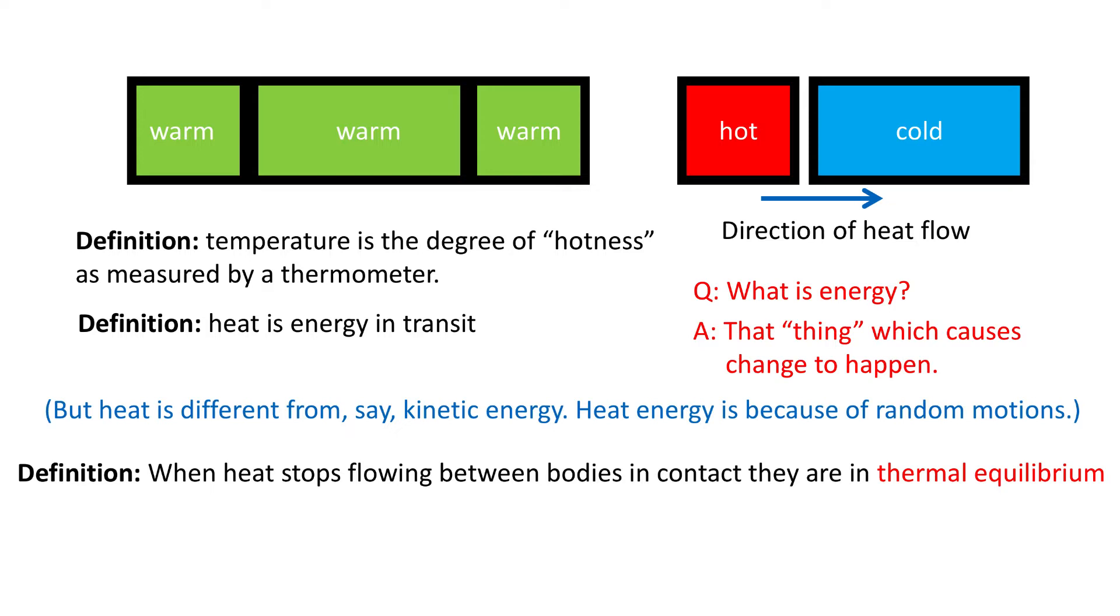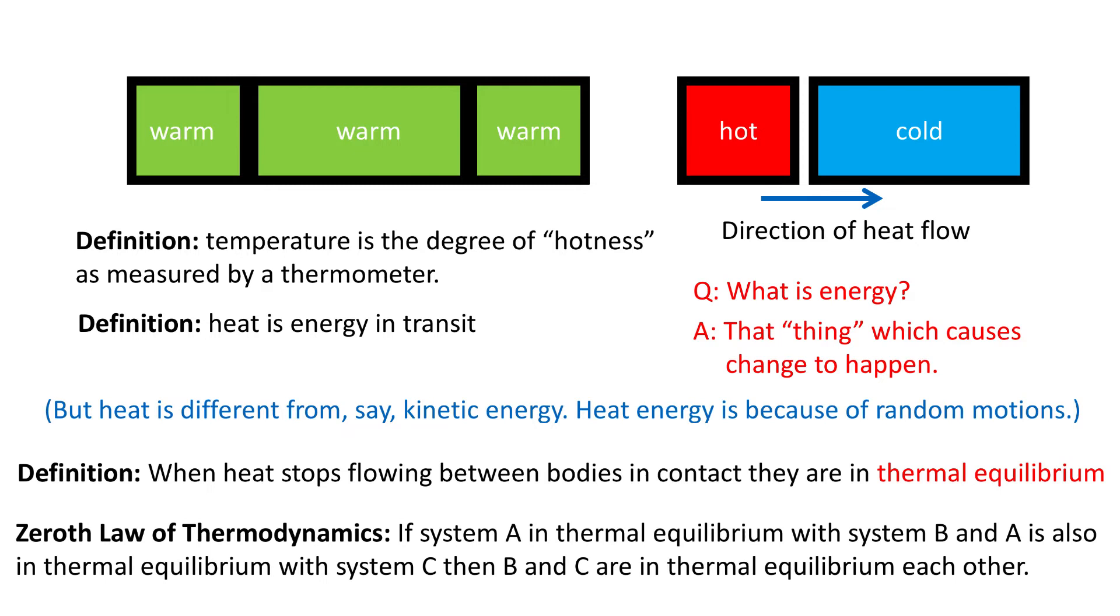Here's a definition of thermal equilibrium: when heat stops flowing between bodies in contact, we say those bodies are in thermal equilibrium. Thermodynamics cannot tell you the rate, but it tells you that when they are in equilibrium, no heat flows. This brings us to the zeroth law of thermodynamics. It's called the zeroth law because it's sort of obvious: if system A is in thermal equilibrium with B, and A is in equilibrium with C, then B and C have to be in thermal equilibrium with each other. Here you see three bodies in thermal equilibrium—they're not exchanging heat anymore because they've come to the same common temperature.